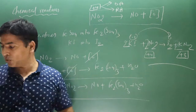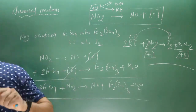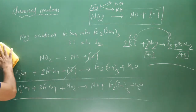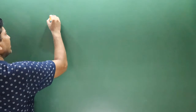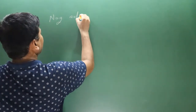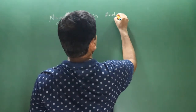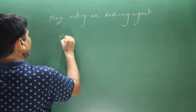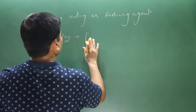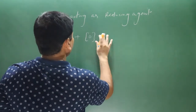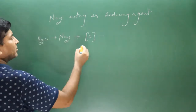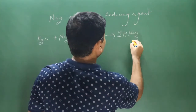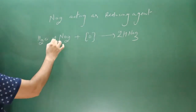So far we have completed reactions related to NO2's oxidizing property. Now let's discuss chemical reactions related to its reducing property. When nitrogen dioxide acts as a reducing agent, it accepts nascent oxygen and converts into two molecules of nitric acid (HNO3).